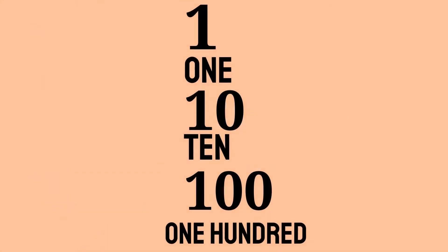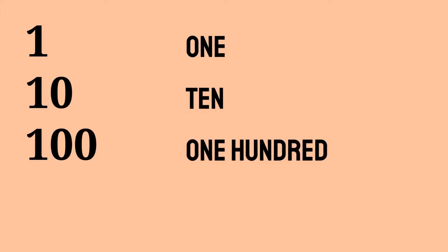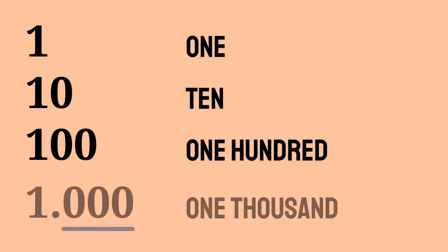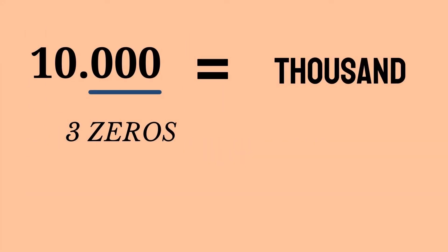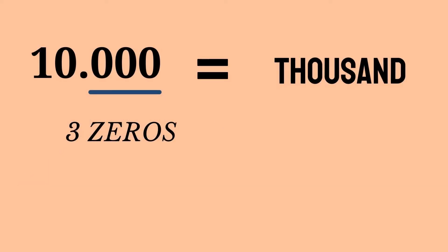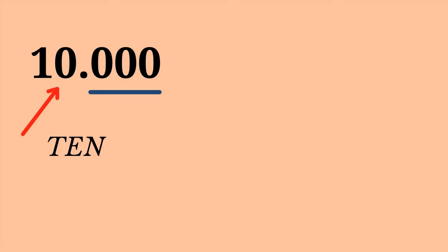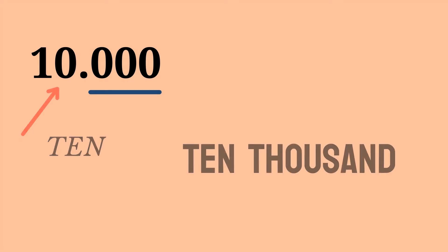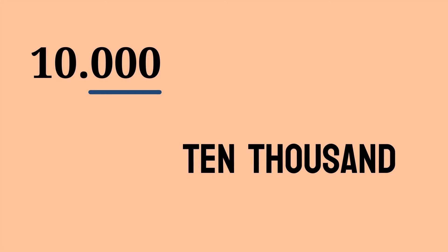I wrote the numbers here and let's start with the first three. We already know the first three numbers: one, ten, and one hundred. Now let's look at this number — this is one thousand. We have three zeros, that is a thousand. Every three zeros we usually use a comma. The next number has three zeros again, that's thousand, and this is ten, so ten thousand.